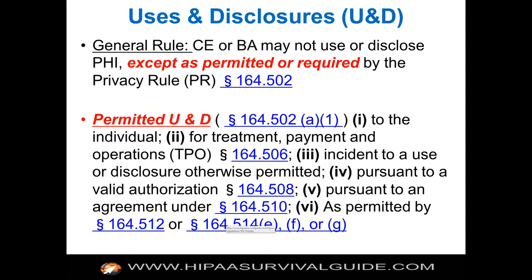You can't use or disclose PHI except as permitted or required under the privacy rule. Section 164.502 is the general rule, and it walks through all the other sections — 506, 508, 510, 512 — while specifying what scenarios you're allowed or required to act on. If you want to determine if the privacy rule has been violated, you walk down methodically through Section 164.502, asking questions like: was the PHI released to the individual? Was it released for treatment and payment operations to another covered entity? Is it incident to a use or disclosure otherwise permitted?